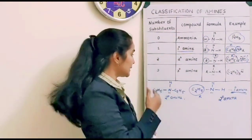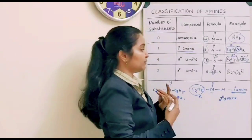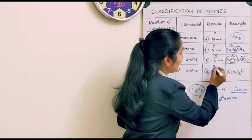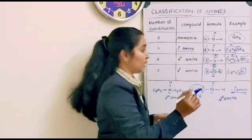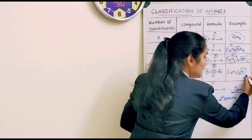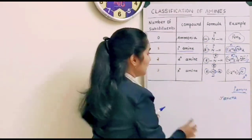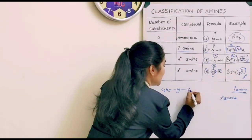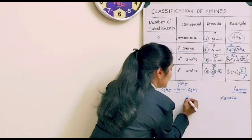If the number of substituents is 3, that is a tertiary amine. The nitrogen is not bonded with any hydrogen — all its valences are completed by alkyl or aryl groups, except for the lone pair of electrons. At the nitrogen, we don't have any hydrogen atoms bonded. So without doubt, this is a tertiary amine. For example: C2H5-N-(C2H5)2 — three ethyl groups on nitrogen, no hydrogen. This is a tertiary amine.